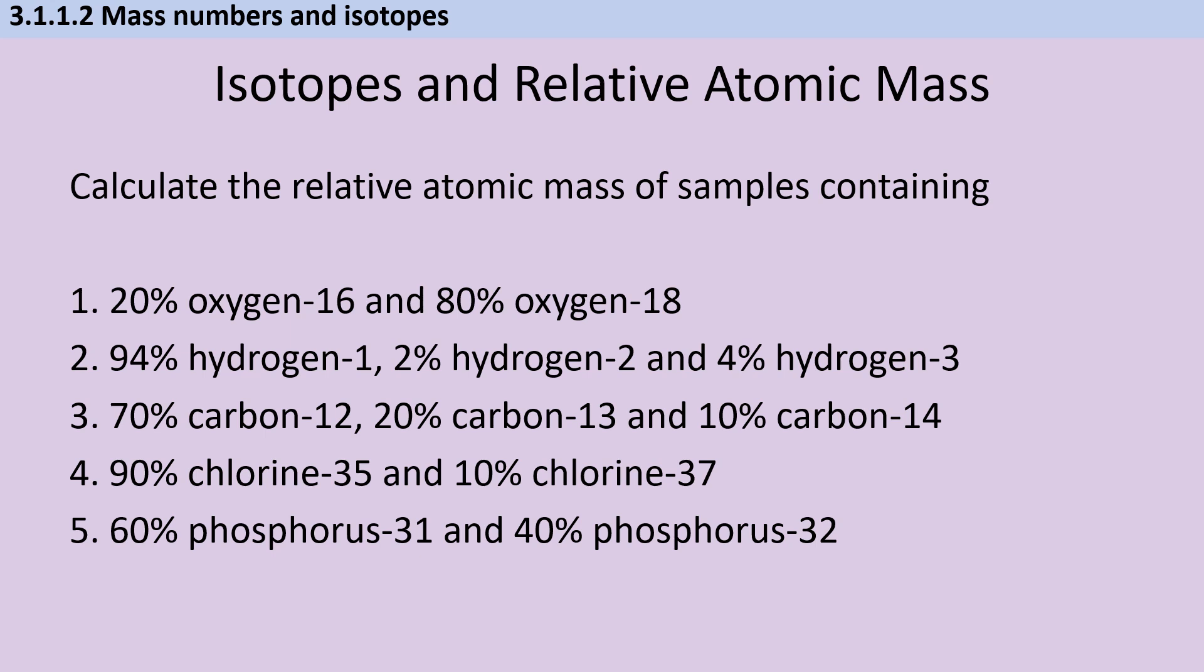Whichever one of those three methods you prefer, now's your opportunity to pause the video and check that you're confident calculating relative atomic mass. For the first one, you're going to need to work out 20% of 16 and add that to 80% of 18. So hopefully you worked out that 20% of 16 was 3.2 and 80% of 18 is 14.4. And when we add those together, you get 17.6.